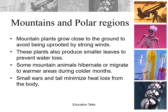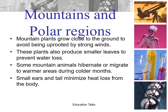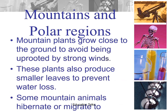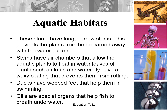Mountains and polar regions: mountain plants grow close to the ground to avoid being uprooted by strong winds. These plants also produce smaller leaves to prevent water loss, such as pine or fir trees. Some mountain animals hibernate or migrate to warmer areas during colder months — such as bears, which hibernate, and Siberian cranes, which migrate. Small ears and tails minimize heat loss from the body.